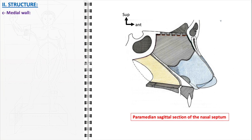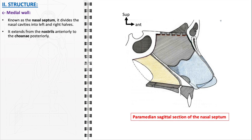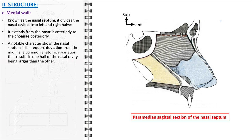The medial wall, commonly known as the nasal septum, plays a pivotal role in nasal anatomy. It serves the critical function of dividing the nasal cavity into left and right halves, thus facilitating bilateral nasal function. Extending longitudinally from the nostrils at the front to the choanae at the back, it forms a continuous partition. A characteristic feature of the nasal septum is its frequent deviation from the exact midline, a prevalent anatomical variation often resulting in asymmetry between the two halves, and in some cases may impact nasal function or airflow.